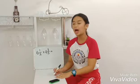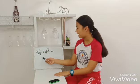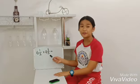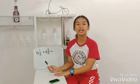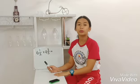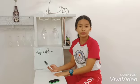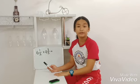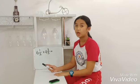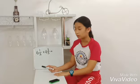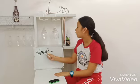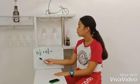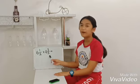We have 6 and 1 half times 4 and 3 fifths. The first thing that we want to do is to convert the mixed numbers to a proper fraction. We have a numerator which is 1 and 3, and our denominator which is 2 and 5.